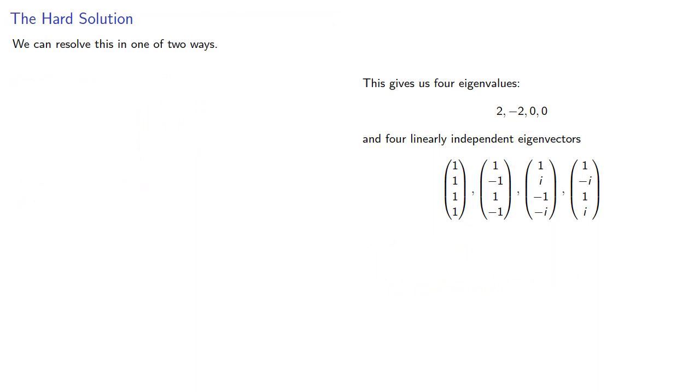The hard way: once we know that lambda equals 0 is an eigenvalue, we can find the eigenvector in the traditional way. If we do that, we find that lambda equals 0 corresponds to two linearly independent eigenvectors.